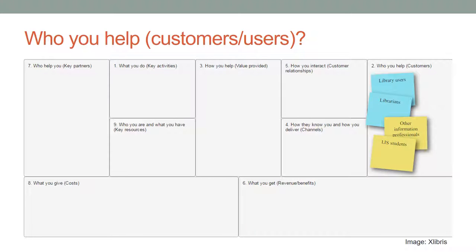At the Customers segment, the following questions are answered: Who is the target user group for whom you are creating this service — in other words, for whom do you create the value? Who is the most important user group? Does the service target the most important user group? Within the ExLibris example, the main target groups are library users, librarians from all types of libraries such as public, school, and academic libraries, other information professionals, and library and information science students.